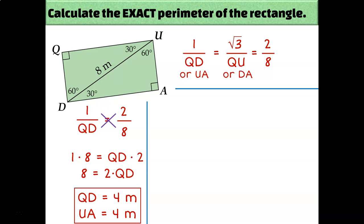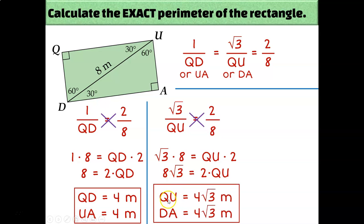Now let's calculate the length of the other sides. So I'll take the other ratio, the square root of 3 over QU, and set it equal to the complete ratio 2 over 8. Cross multiply and solve, I get 8 root 3 equals 2 times QU, divide both sides by 2, and I find out that QU is 4 root 3, which means DA is also 4 root 3.